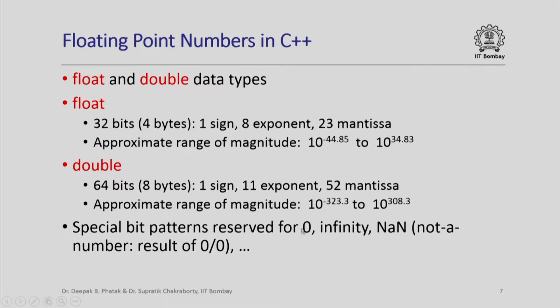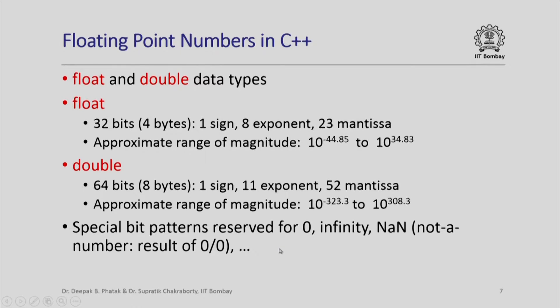We cannot represent 0 exactly using a normalized mantissa, so special bit patterns are reserved for 0, and not only for 0 — also for positive infinity, negative infinity, and values called Not a Number (NaN), which are the result of certain operations. For example, dividing 0 by 0 gives something that is not a real number, and in a computer this is represented by a special bit pattern called NaN. Similarly, there are other special bit patterns.